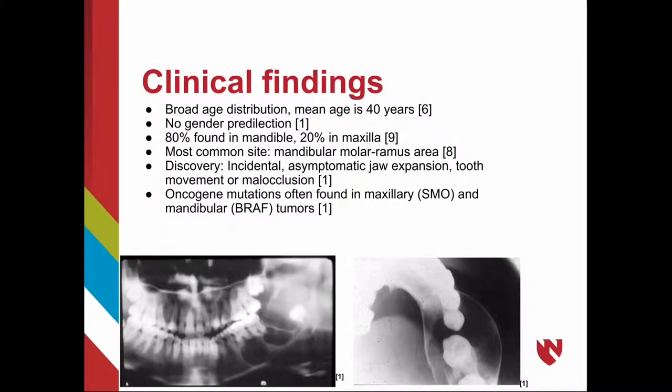Clinical findings include a broad age distribution with a mean age of about 40, no gender predilection, and 80 percent are found in the mandible and 20 percent in the maxilla. The most common site is the mandibular molar-ramus area. Discovery is usually incidental or due to asymptomatic jaw expansion, tooth movement, or malocclusion.